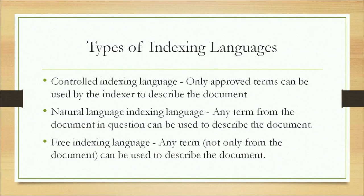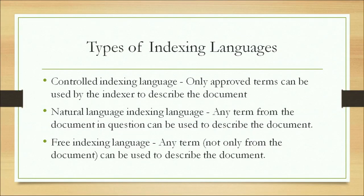There are different types of indexing languages. Controlled indexing language: only approved terms can be used by the indexer to describe the document. Natural language indexing language: any term from the document in question can be used to describe it. Free indexing language: any term — not only from the document but from outside the document — can also be used to describe the document.